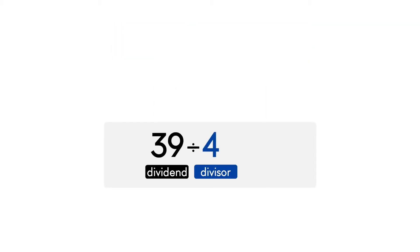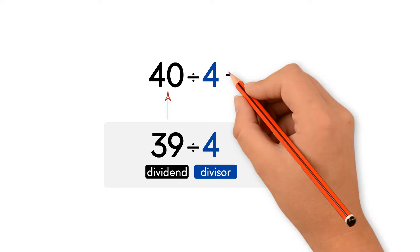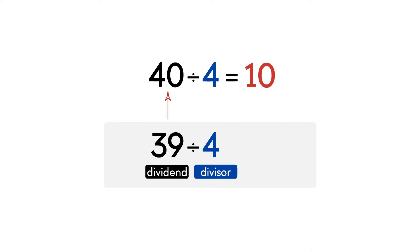Let's recall how we can estimate the quotient of two whole numbers. We round 39 to the closest number that is a multiple of 4. Some basic multiples of 4 are 32, 36, and 40. 40 is closest to 39, so we can use 40. The numbers 40 and 4 are compatible numbers because you can divide them with no remainder. 40 divided by 4 equals 10, so 39 divided by 4 is about 10.